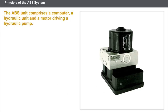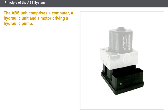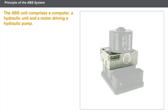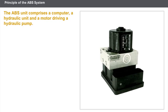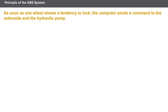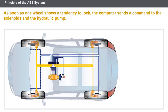The ABS unit comprises the following elements: a computer, a hydraulic unit, and a motor driving a hydraulic pump. The computer receives information from each wheel sensor. As soon as one wheel shows a tendency to lock, the computer sends a command to the solenoids and the hydraulic pump. The computer also receives information from the brake pedal and informs the driver of a problem via a warning light on the instrument panel.